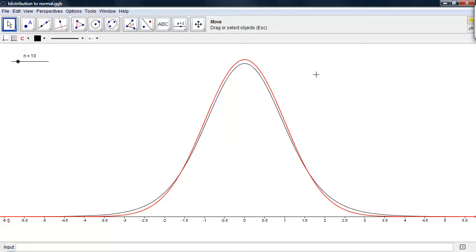When we take the degrees of freedom to be 15, we can start saying the shape of the t-distribution is getting very close to a normal distribution.